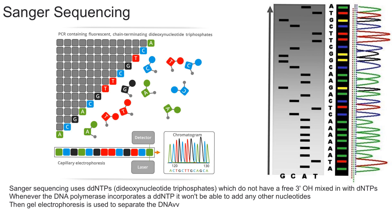Now you might think, what's the importance of this? Essentially what you're going to do is add four different DDNTPs: adenine, guanine, thymine, and cytosine. As you can see over here, this row is guanine, this is cytosine, this is adenine, and this is thymine. Sanger sequencing is going to let you identify which part of the DNA has adenine, cytosine, thymine, or guanine, and then the sequence can be determined from the gel electrophoresis.